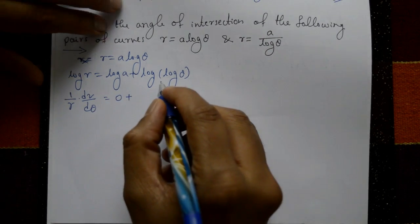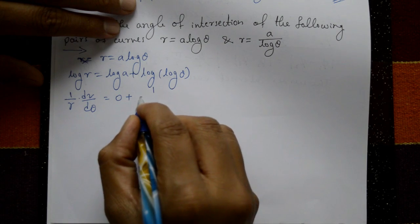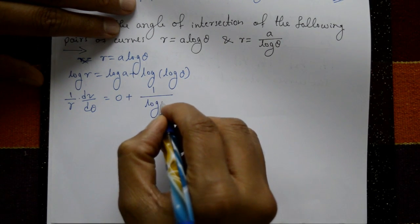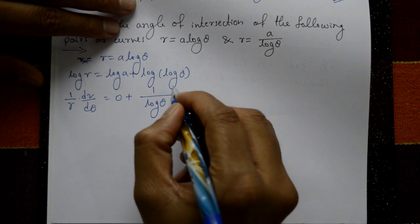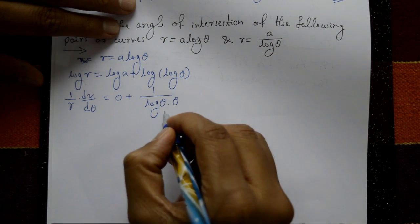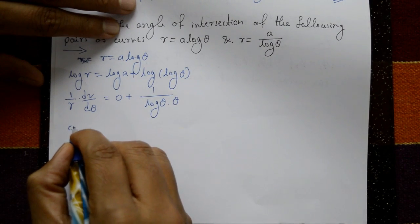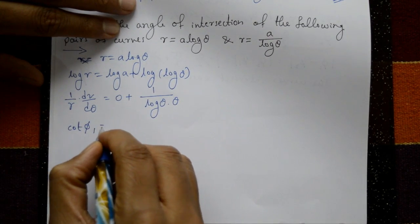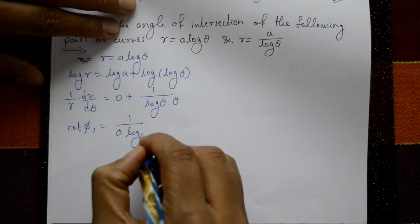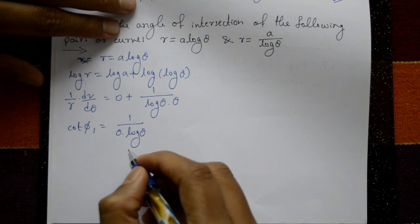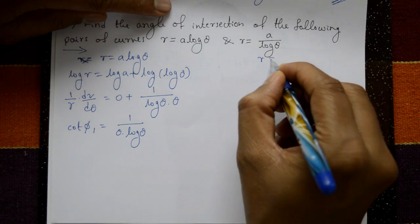Differentiating log(logθ) gives 1/logθ · (1/θ), so cotφ₁ = 1/(θ·logθ).